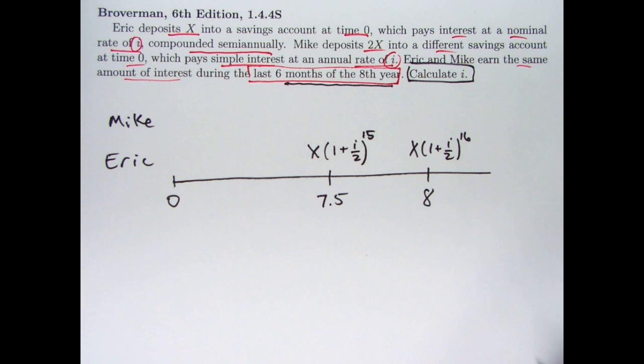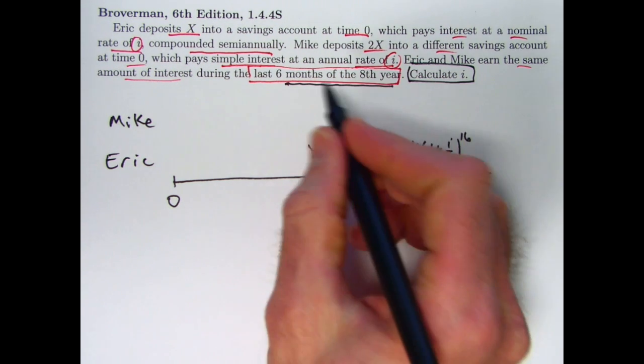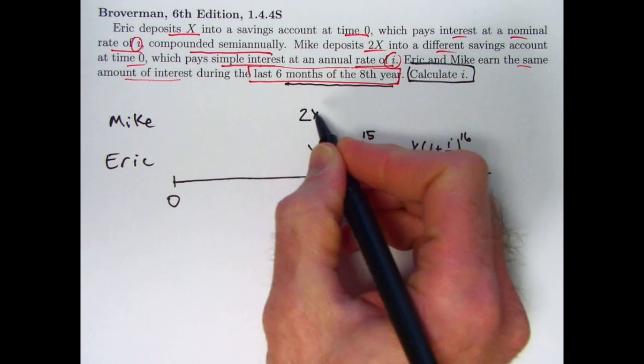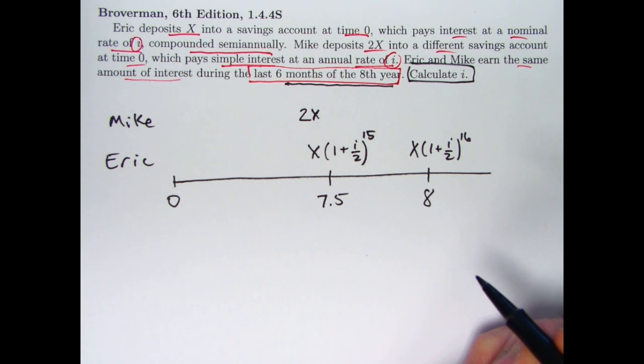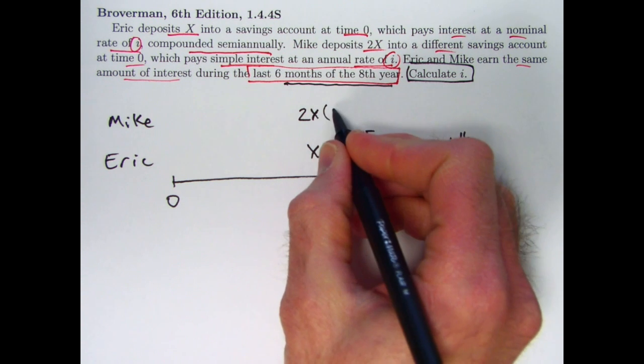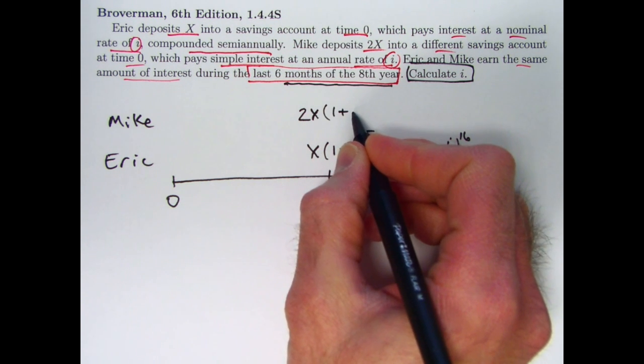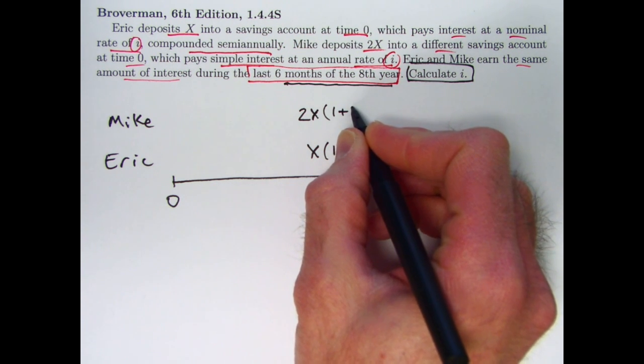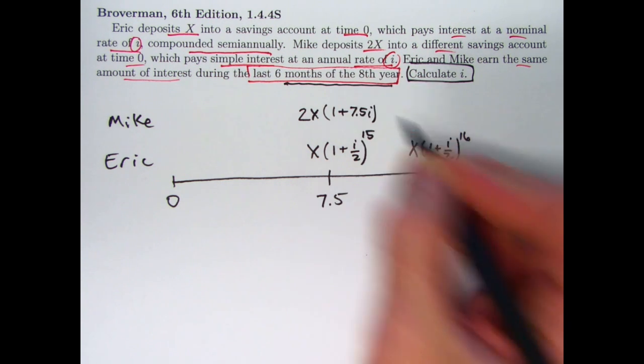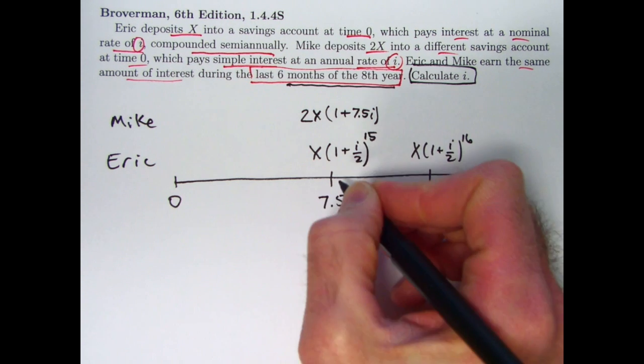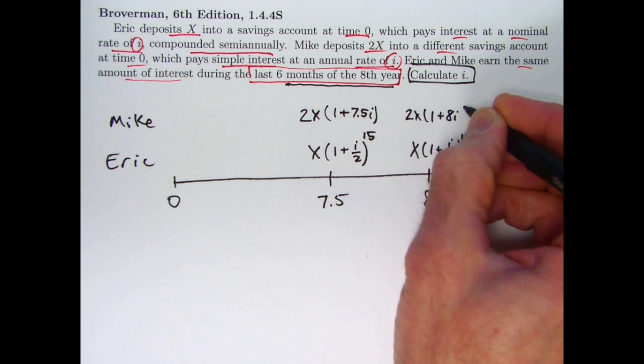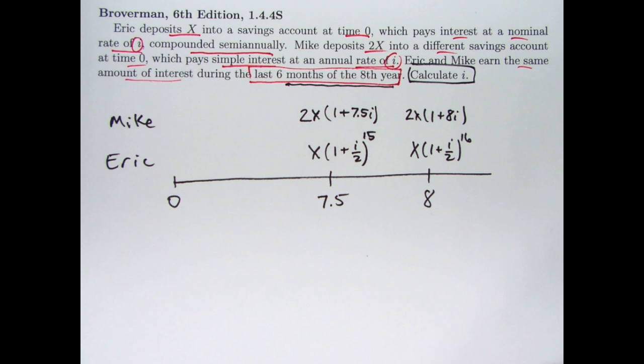The difference, this thing minus that thing, is going to be the amount of interest that Eric gets over that 6-month period, the last 6 months of the 8th year. How about for Mike? His deposit is 2X. His money is accumulating with simple interest at annual rate i. You take 1 plus i times the amount of time for the factor here. Instead of raising to a power, the amount of time is 7.5. So I have 2X times 1 plus 7.5i for the amount at time 7.5. And for the amount at time 8, it's going to be 2X times 1 plus 8i.